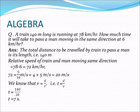Since the man and the train are moving in the same direction, the relative speed will be the difference between their speeds. Train speed is 78 kilometer per hour and speed of the man is 6 kilometer per hour. So the relative speed is 78 minus 6, equal to 72 kilometer per hour.